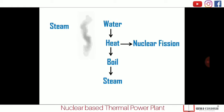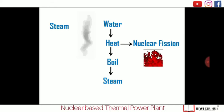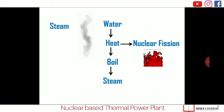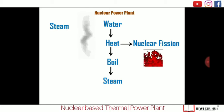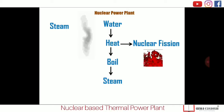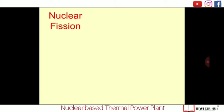Instead of generating heat by coal combustion, we can generate heat using the process of nuclear fusion. During nuclear fusion, a huge amount of heat can be generated, and that heat can be used to raise the temperature of water and convert it into steam. This is the basic concept of a nuclear power plant.